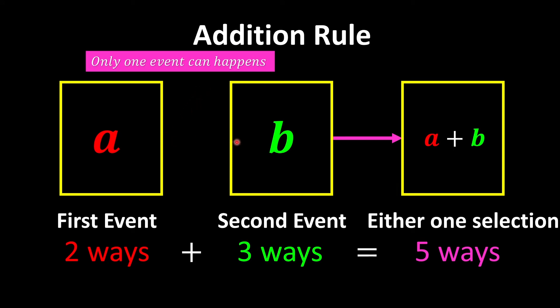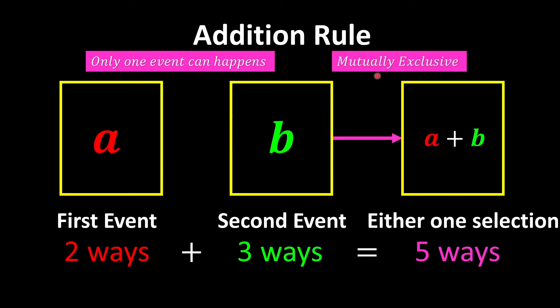This is what we call the addition rule — only one event can happen, no longer a sequence of events. If A happens, B won't happen; if B happens, A is no longer possible. One more condition: both events must be mutually exclusive — choices in A wouldn't appear in B, and choices in B wouldn't appear in A. For example, if iPhone is in selection A, it cannot also be in selection B, otherwise we'd be double counting. The keyword for the addition rule is 'or', like choosing a phone or a device.